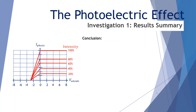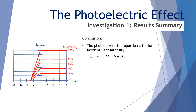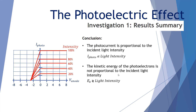Let's look at what conclusions can be drawn from this first investigation of the photoelectric effect. We found the photocurrent is proportional to the incident light intensity, and we write this as i_photo ∝ light intensity. If we increase our light intensity, we increase the photocurrent. If we decrease our light intensity, we decrease the photocurrent. Also, the kinetic energy of the photoelectrons is not proportional to the incident light intensity, and we can write that symbolically as E_K is not proportional to the light intensity.